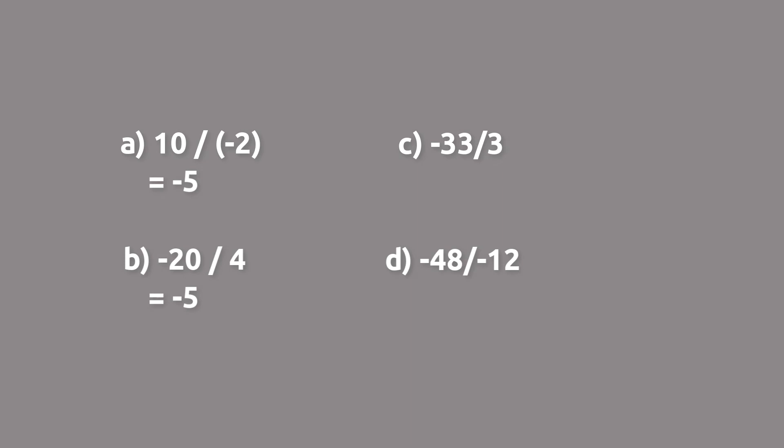With c, it's written as a fraction, negative 33 over 3, but all the fraction bar means is divide. So this is the same thing as negative 33 divided by 3. One is negative, one is positive, so we know the solution is going to be negative. And then 33 divided by 3 is 11. So negative 33 divided by 3 is negative 11.